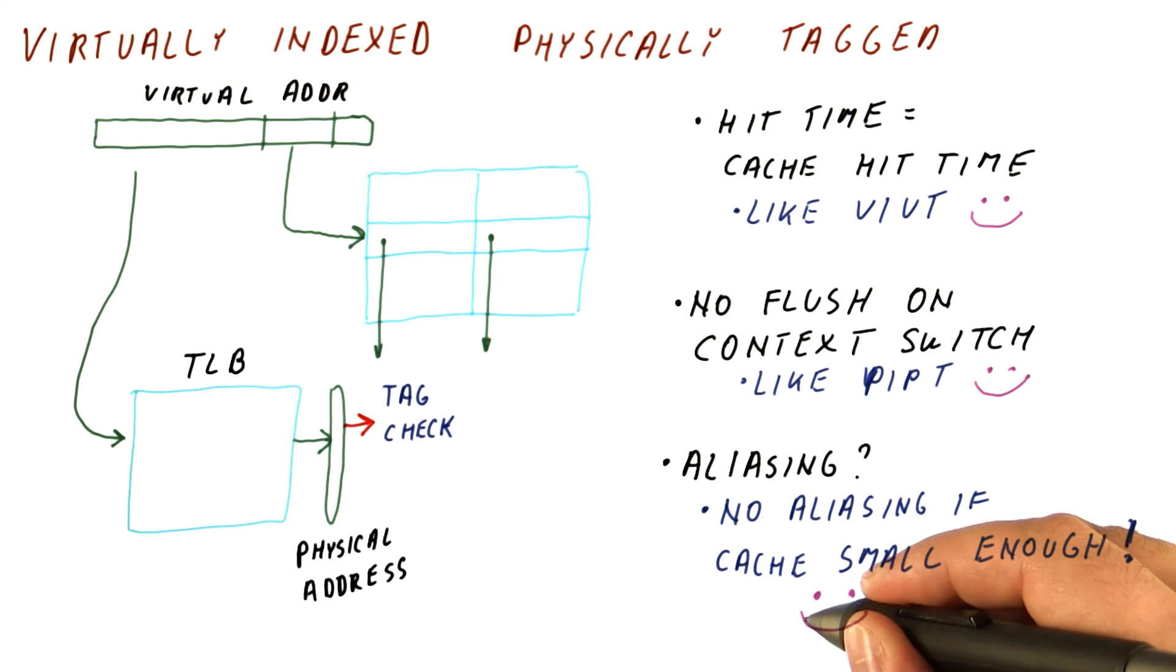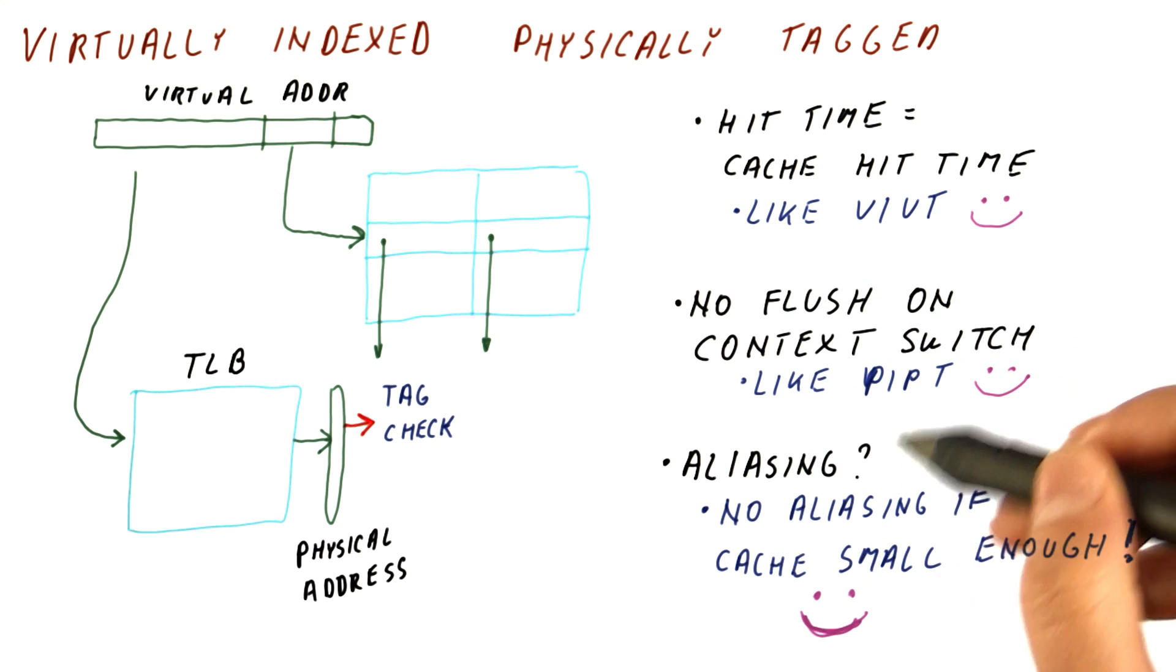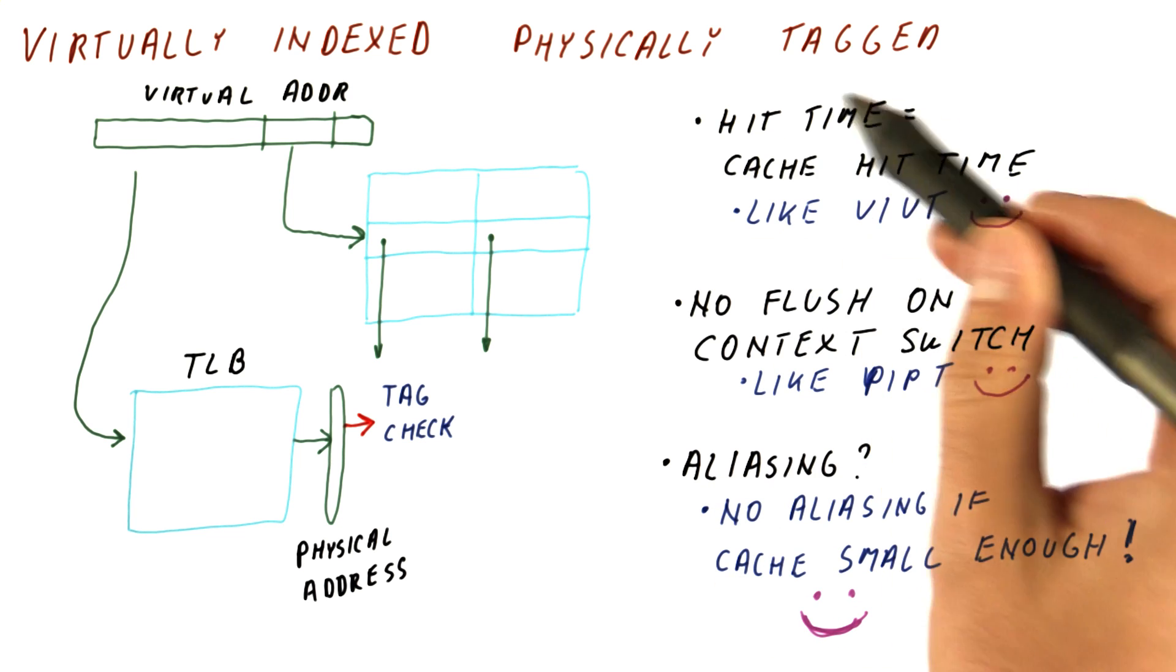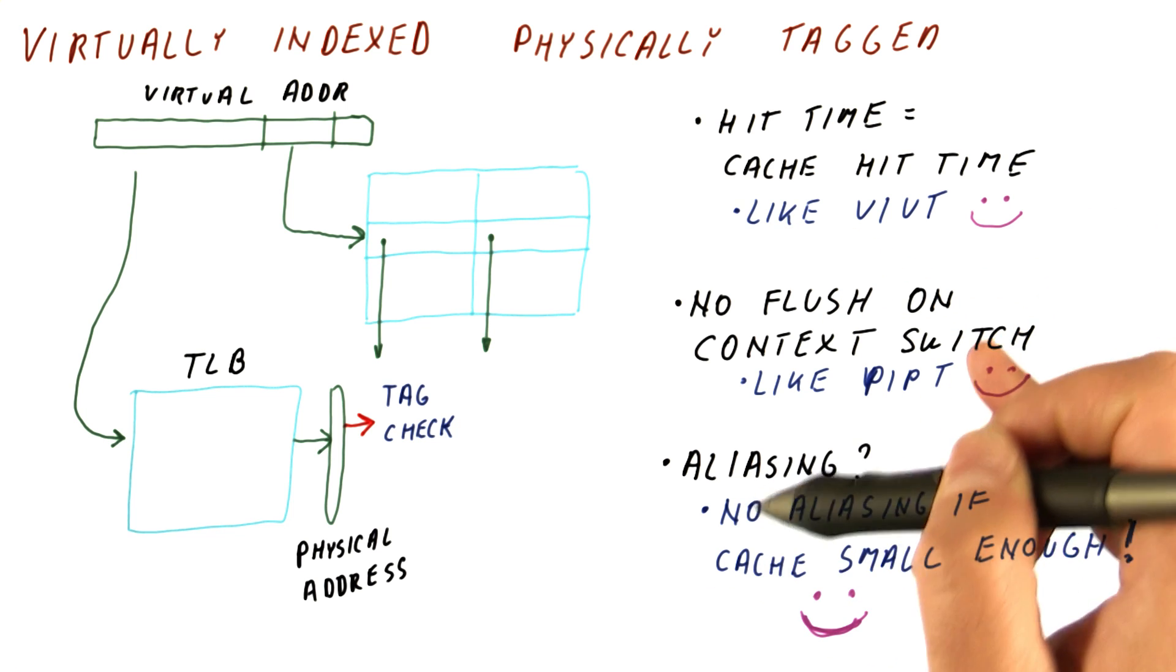So this is very nice, because it basically gives us the correctness, the no flush on context switch of the physical caches with the hit time of the virtual caches. But let's figure out what we need to do in order to not have aliasing.